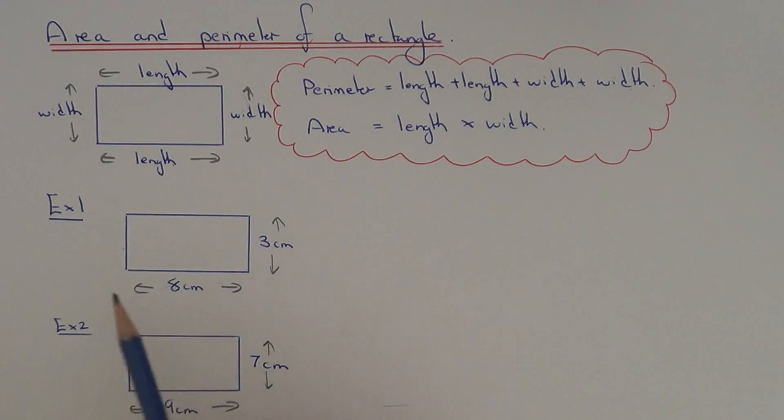So let's have a look at the two examples here. So in example one, we have an eight centimetre by three centimetre rectangle and we need to work out the perimeter and the area of the rectangle.